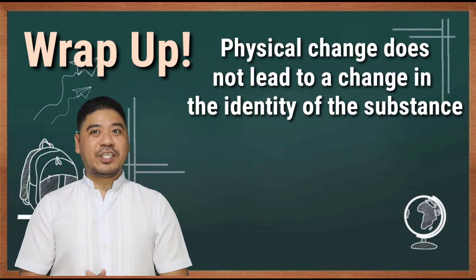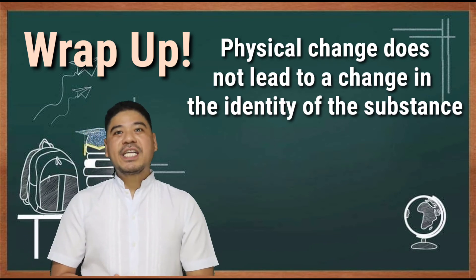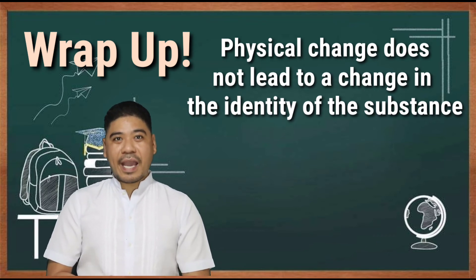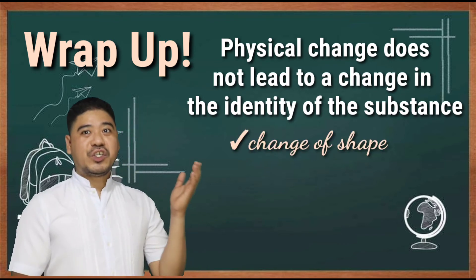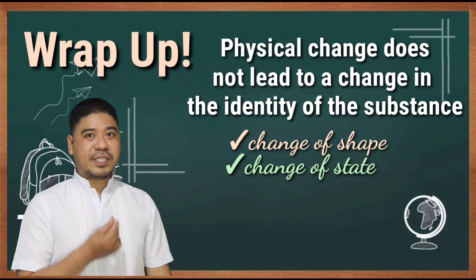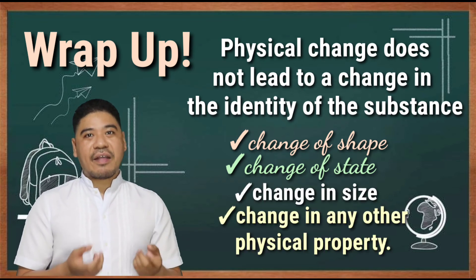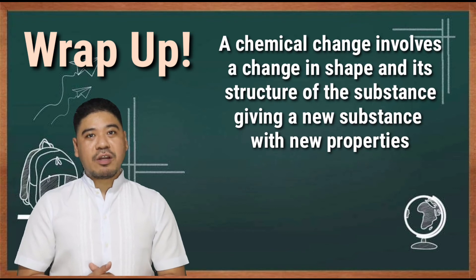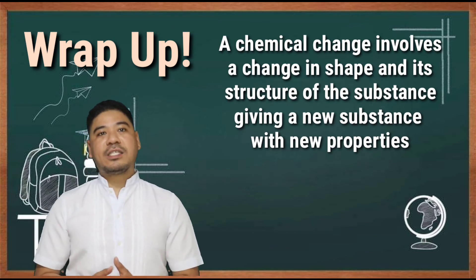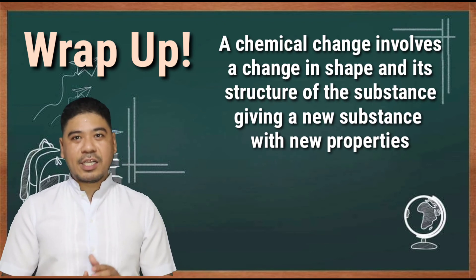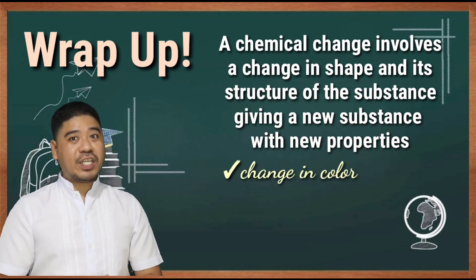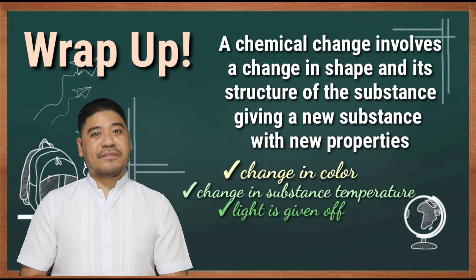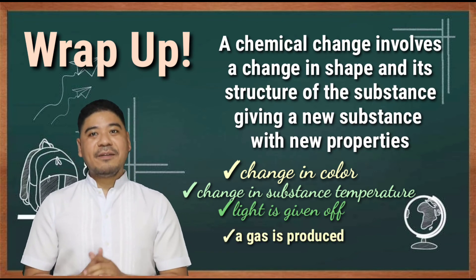To wrap it up, physical change does not lead to a change in the identity of the substance. Many physical changes are reversible, especially those involved in phase change. Possible signs a physical change has taken place: change of shape, change of state, change in size, and change in any other physical property. A chemical change involves a change in the structure of the substance, giving a new substance with new properties. Possible signs a chemical change occurred: a change in color, a change in the substance's temperature, light is given off, a gas is produced, and a change in taste.